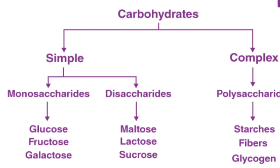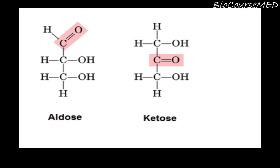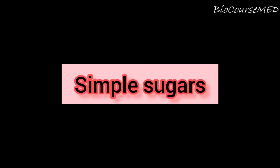Talking about the classification of carbohydrates, they are broadly classified into monosaccharides, oligosaccharides, and polysaccharides. This categorization is based on the number of sugar units. Monosaccharides and oligosaccharides are sweet to taste, crystalline in character, and soluble in water, and hence they are commonly known as sugars.